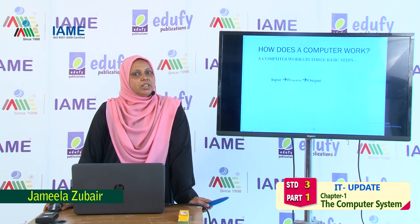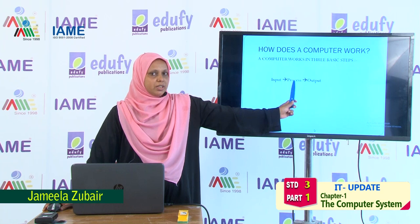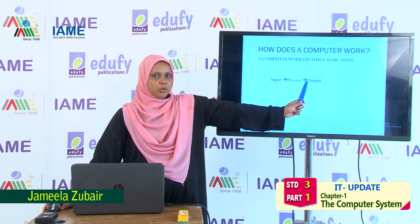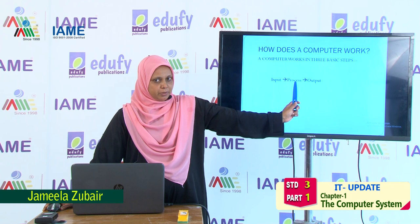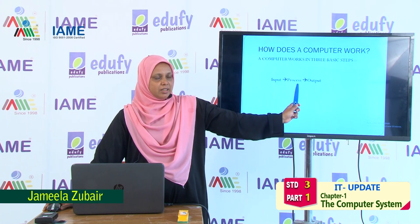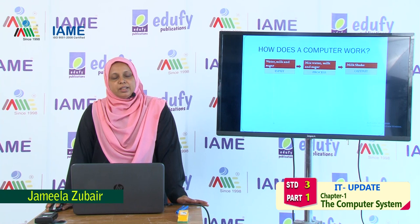How many steps are there? There are three steps involved. Which are the three steps? First one is input, second one is process, and the third one is output. Let us say it once again: input, process, output. I will give you an example of it. What do you mean by input, what do you mean by processing, and what do you mean by output?